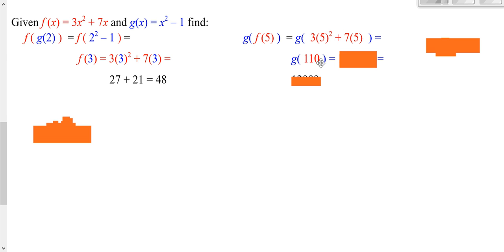That's the whole inside. Now, I've got to plug that into G. G just says your input squared minus 1. Input squared minus 1. And my input is that 110.